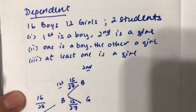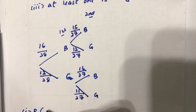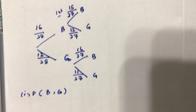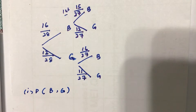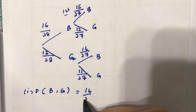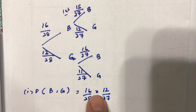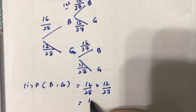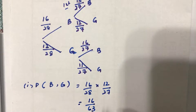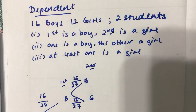Now we can answer the questions. The first question asks for the first pick to be a boy and the second to be a girl — a specific order. The probability of getting a boy first followed by a girl is 16 over 28 times 12 over 27. Using a calculator, this gives 16 over 63. That is the probability of getting a boy followed by a girl.